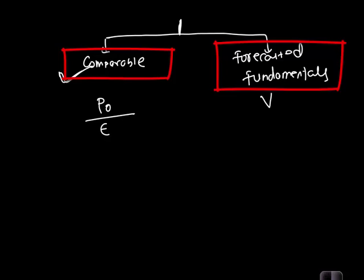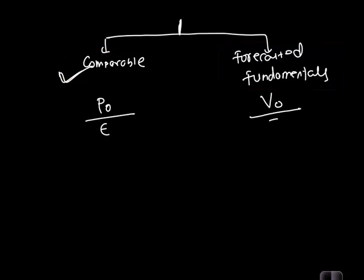The second category is the method of forecasted fundamentals, where we use intrinsic value derived through a valuation metric — such as the Gordon growth model, dividend discount model, free cash flow, or other justified fundamental models — as a ratio to earnings or sales.